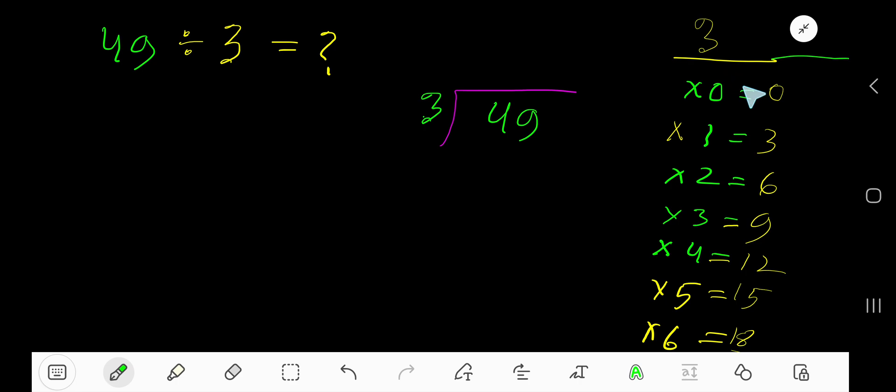To find out the multiplication table of 3, just add 3 with the previous step. 0 plus 3, 3. 3 plus 3, 6. 6 plus 3, 9. 9 plus 3, 12. 12 plus 3,